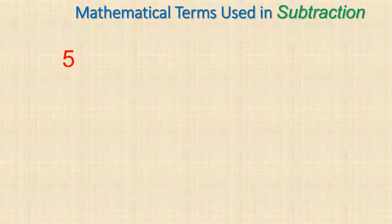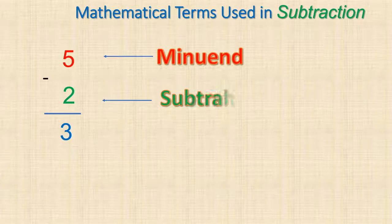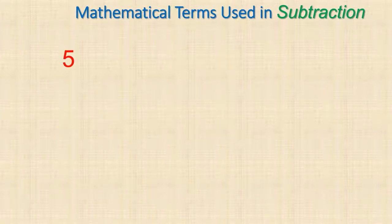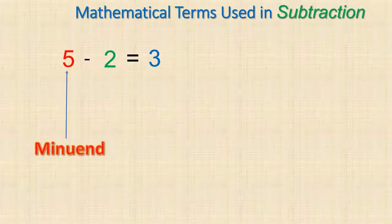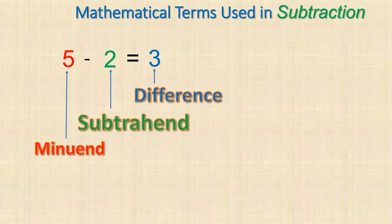Now, what about subtraction? In subtraction, five minus two gives you three. Five is what we call the minuend, two is the subtrahend, and the answer — three — is your difference. Whether written vertically or horizontally, five is the minuend, two is the subtrahend, and the answer in subtraction is called the difference.